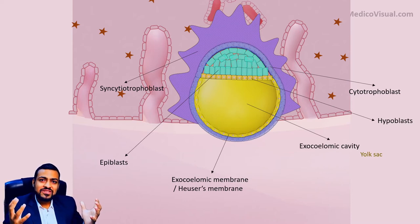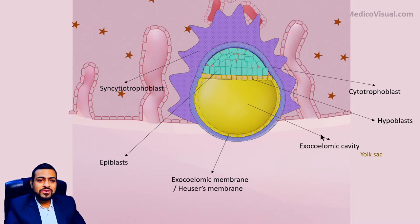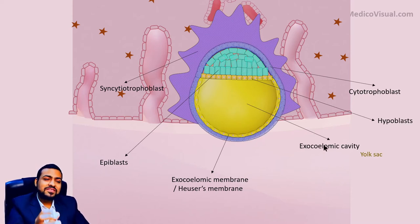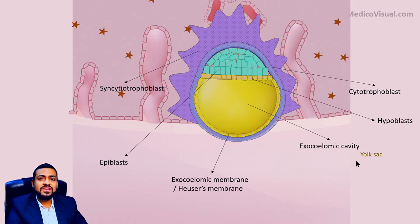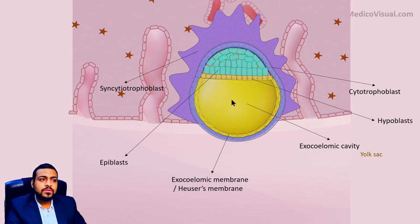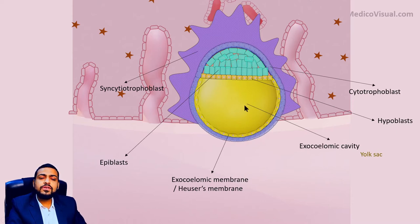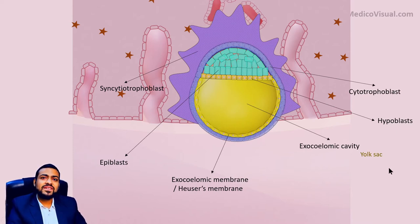Even though there is no yolk in the exocelomic cavity of the human embryo, it is still called the yolk sac, possibly due to its resemblance to the yolk sac structure in the bird's embryo. Embryologists conventionally call it the yolk sac. Truly speaking, even in the human embryo, the yolk sac has a role in provision of nutrients to the embryo during early stages, so this name is somehow justified.